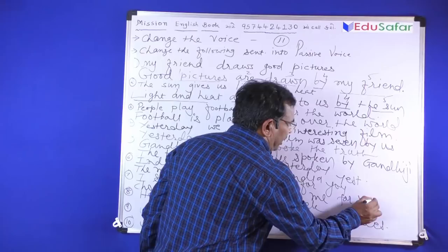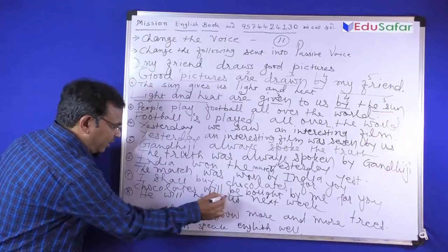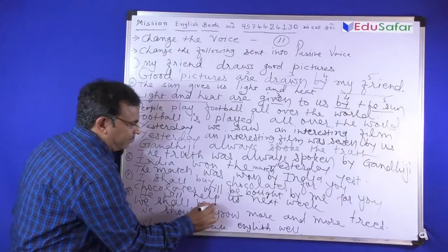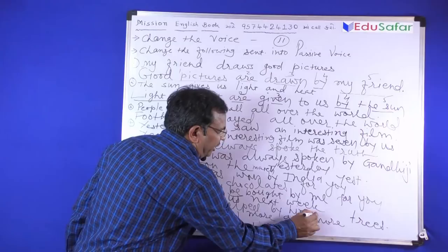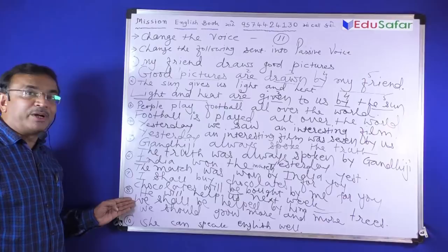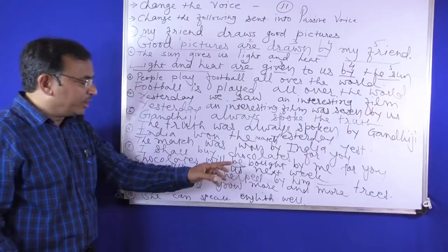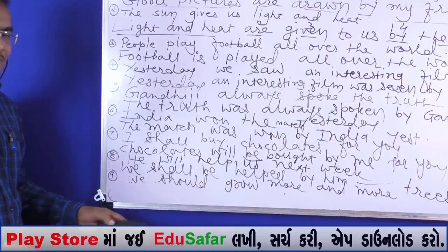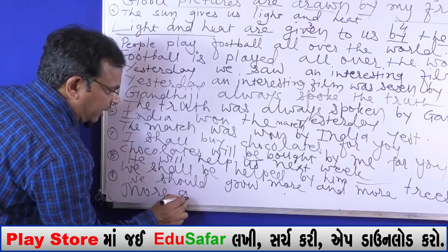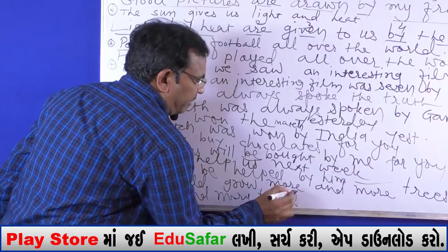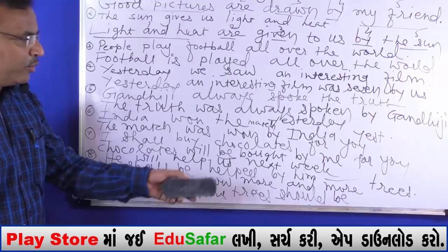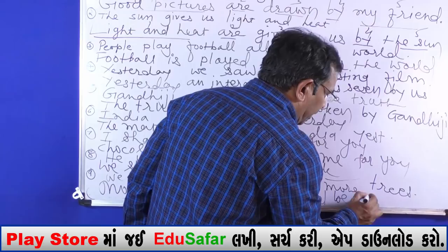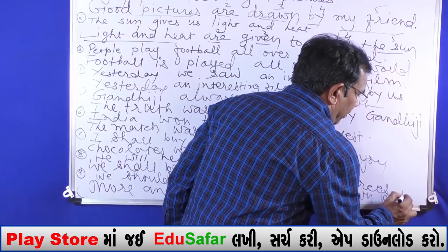He will help us next week. We shall be helped by him next week. We should grow more and more trees. More and more trees should be grown. In modal, there is no form of 'to be', so we use 'should'. Grown is the third form. More and more trees should be grown by us.